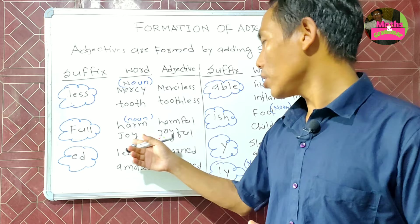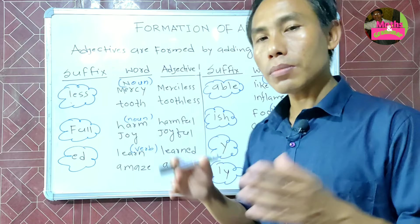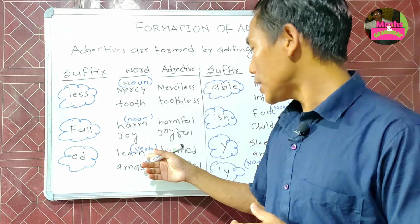Again, '-ed' is a suffix. When using '-ed,' 'learn' is a verb. When I put '-ed' at the end, that becomes an adjective. So 'amaze' becomes 'amazed.'